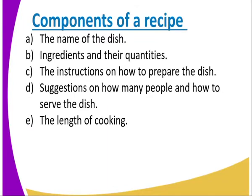The components of a recipe: first, it must have the name of the dish — you must know what food you are preparing. Two, the ingredients and their quantities. Three, the instructions on how to prepare the dish. Four, suggestions on how many people will be taking the meal and how to serve the dish. Number five, the length of cooking.